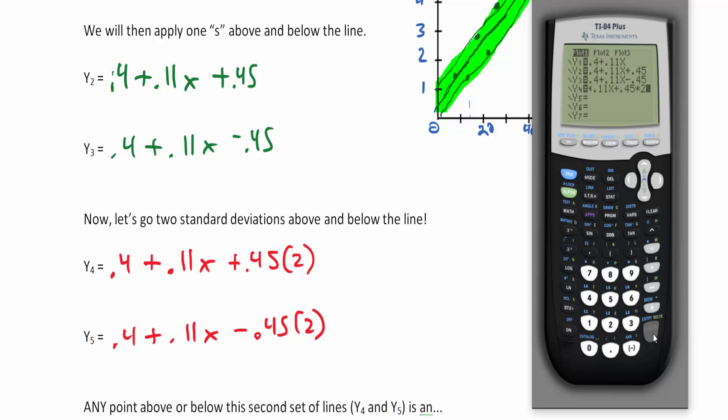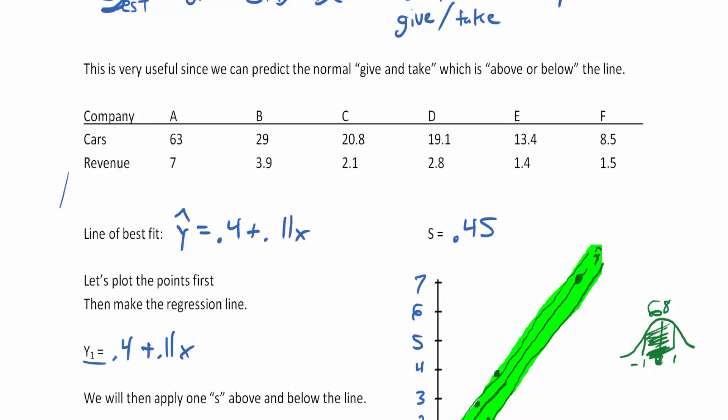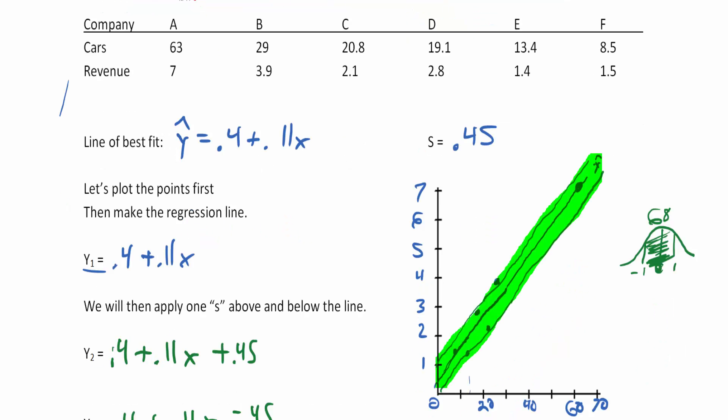Then 0.4 plus 0.11x minus 0.45 times 2. Now we hit graph, and you see another line above it and another line below it.